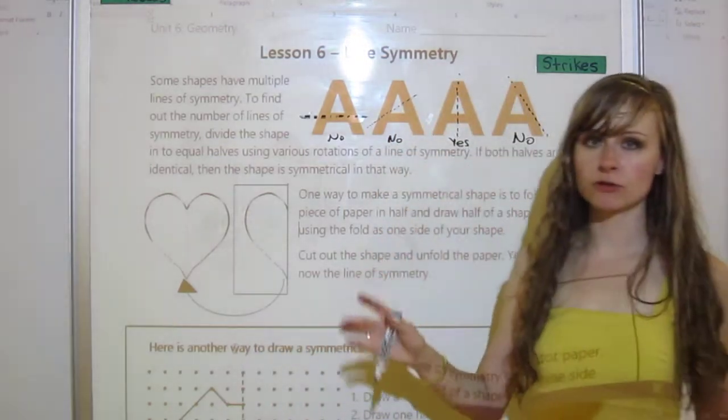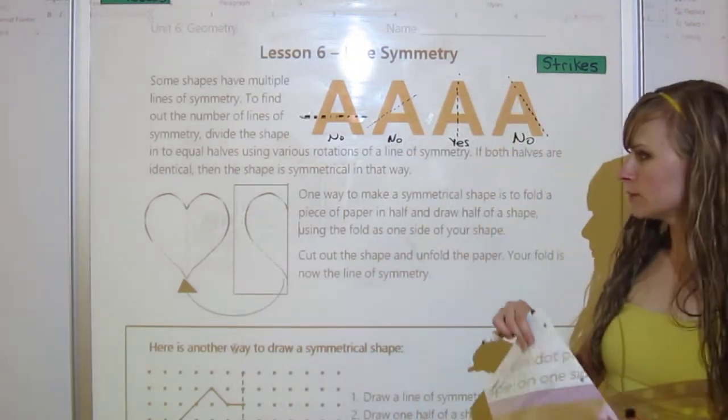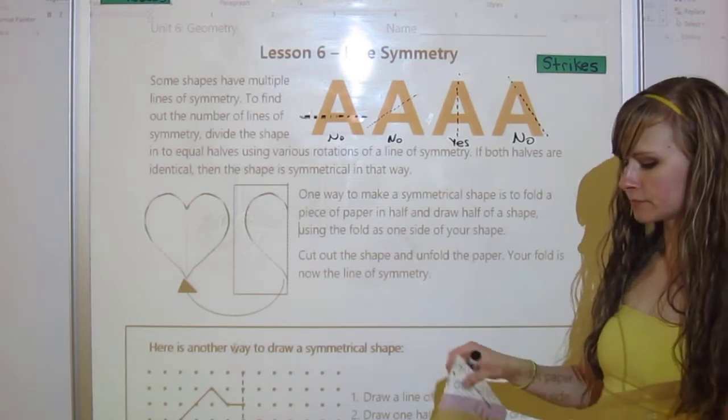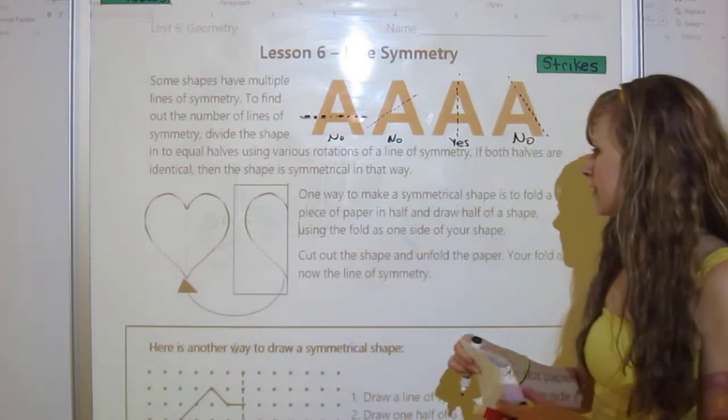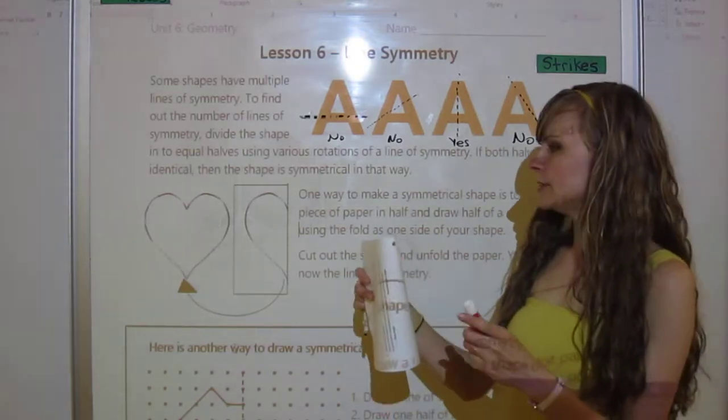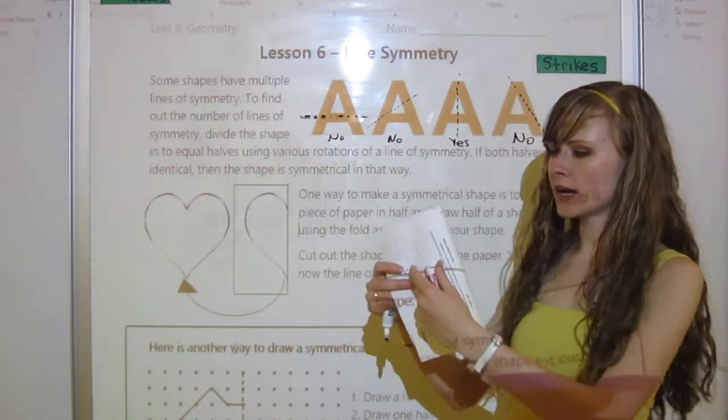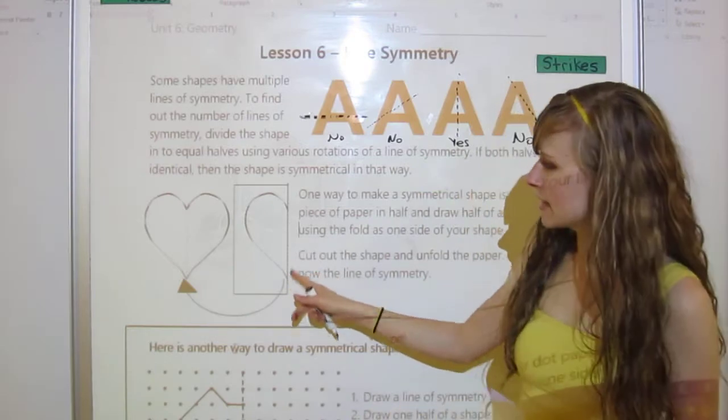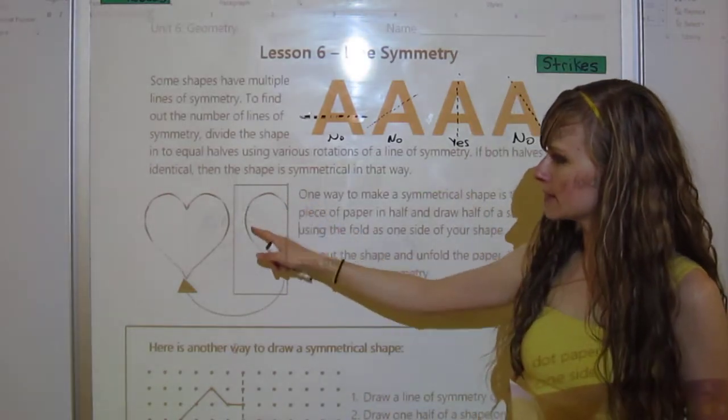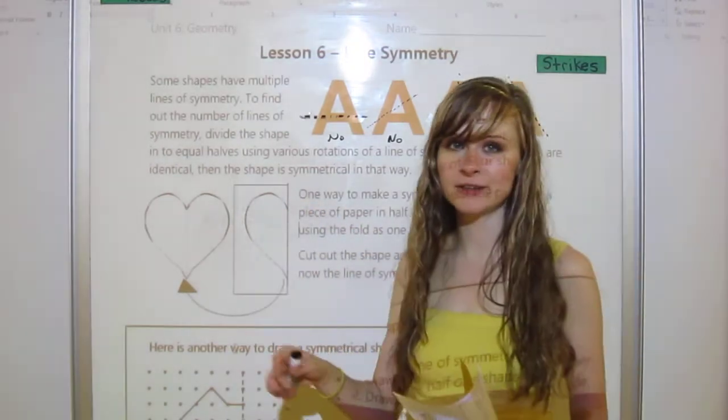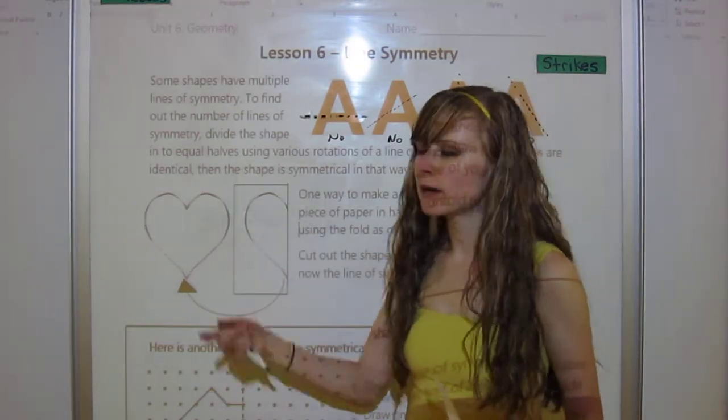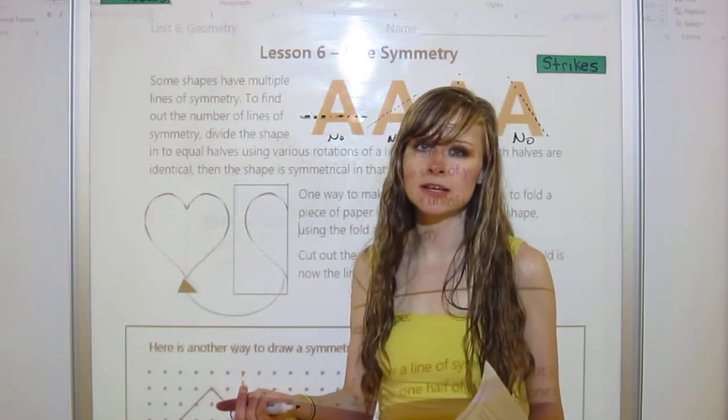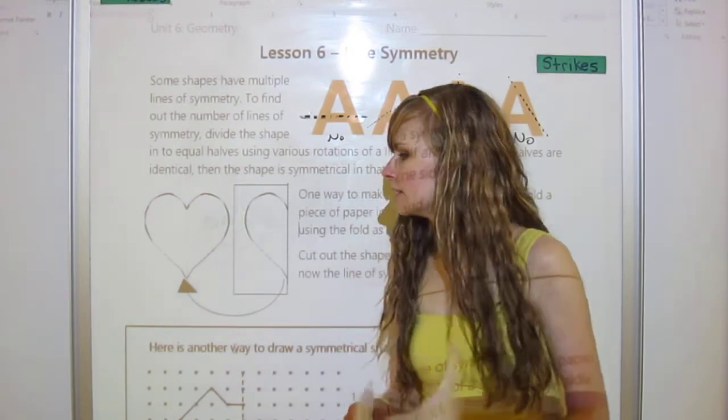So one way to make a symmetrical shape is to fold a piece of paper in half. So if I folded this in half and actually made a line, I'm not going to, and then draw half a shape and use a fold as one of the sides of my shape. And here's the example. Here's the fold right here. There's a heart. I'm sure you all know how to do this. But anyways, once you cut it out and open it up, that fold right there, that's your line of symmetry. That's the same thing.